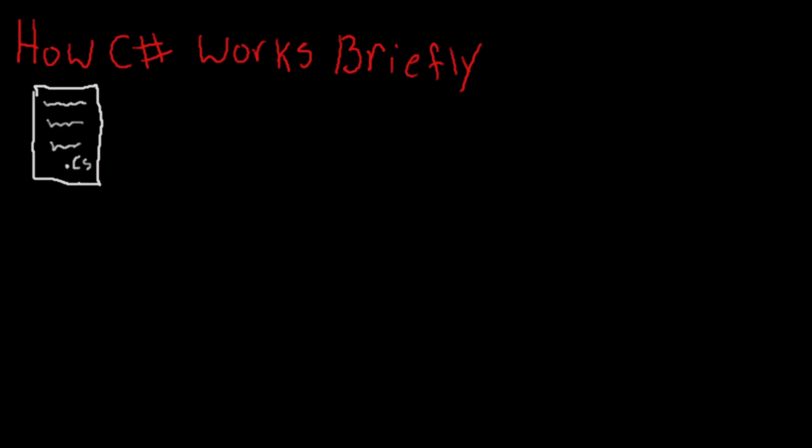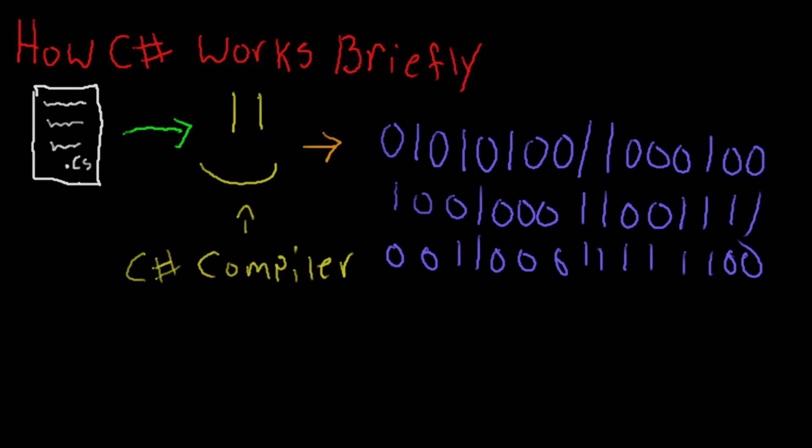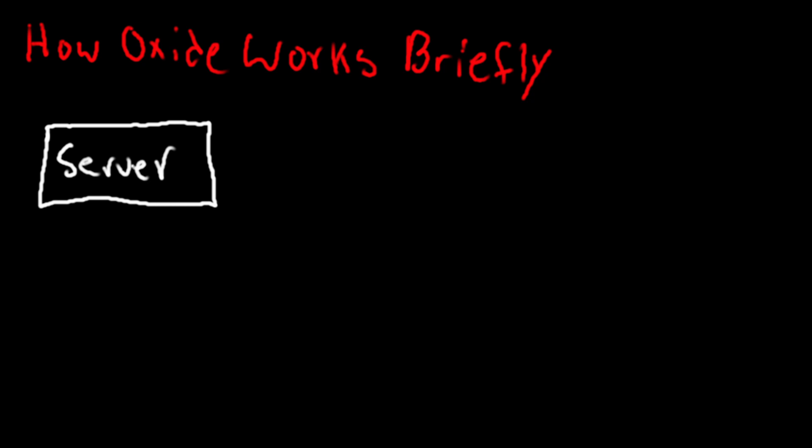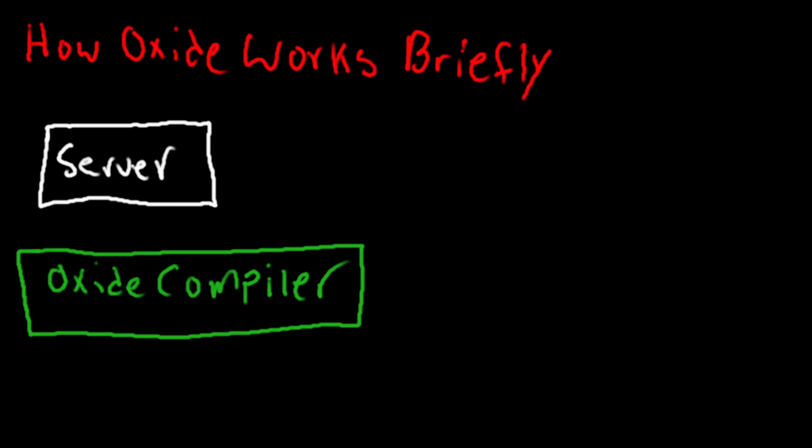If you think about how C-sharp works, we basically compile all of our C-sharp files into machine code, and then our computer just executes and runs this machine code. This requires oxide to run a C-sharp compiler alongside the Rust server and loads our C-sharp files up, and then compiles them on the fly and links the plugins into the server.